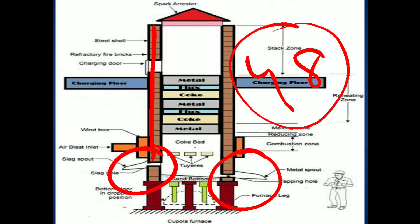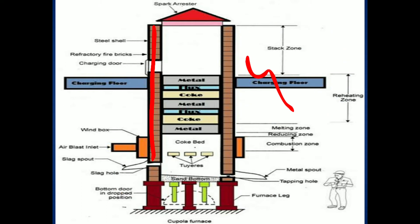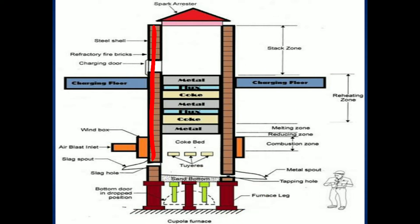Before starting this process, the cupola has to be prepared with some lining repairs. Since the process produces very high temperature, the linings must be checked and repaired. A layer of 100 to 150 mm thick sand is rammed at the bottom. On the sand, we place smooth or dry pieces of wood to collect the molten cast iron. It also consists of tuyeres — nozzles to supply hot air into the charge to make combustion.